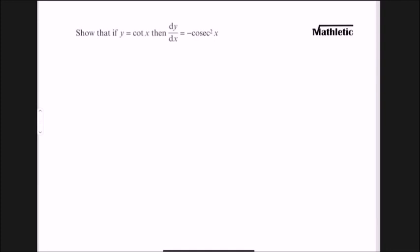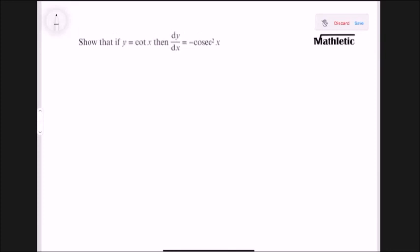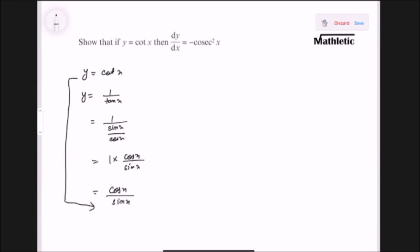Next we need to derive the differentiation of cot x. The process is more or less similar — the same pattern: take the reciprocal first and then differentiate using the quotient rule. Cot x is the reciprocal of tan x, so replace it with 1 by tan x, then apply the formula for tan x which is sin x by cos x. If you simplify, you eventually get cos x by sin x.